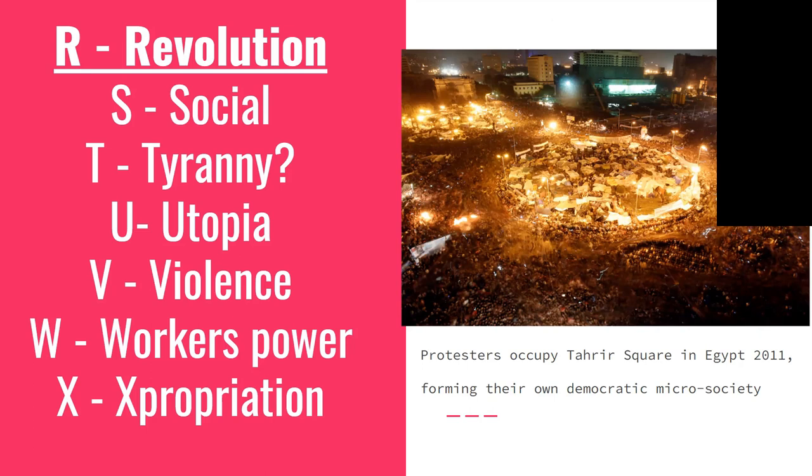S is for social revolution. You can divide revolution into different types. A political revolution transfers power from one section of the ruling class to another — or from, say, a military government to a democratic government — but leaves the basic social structures of society intact. A social revolution is more far-reaching: it's where a new class rises to power and transforms society. A socialist revolution would be a social revolution of the working class to organize society in their interests. It's worth noting that revolutions are not uncommon — there are dozens that have happened in the past couple of decades alone.